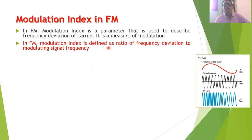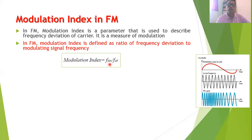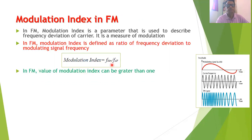In FM, modulation index is defined as the ratio of frequency deviation to modulating signal frequency. The formula for modulation index in FM is: modulation index equals frequency deviation divided by modulating signal frequency. In the numerator we have a frequency and in the denominator also we have a frequency, so it is a dimensionless ratio.